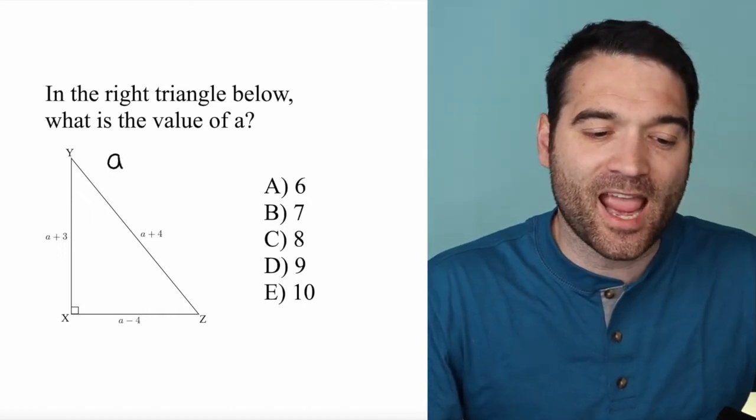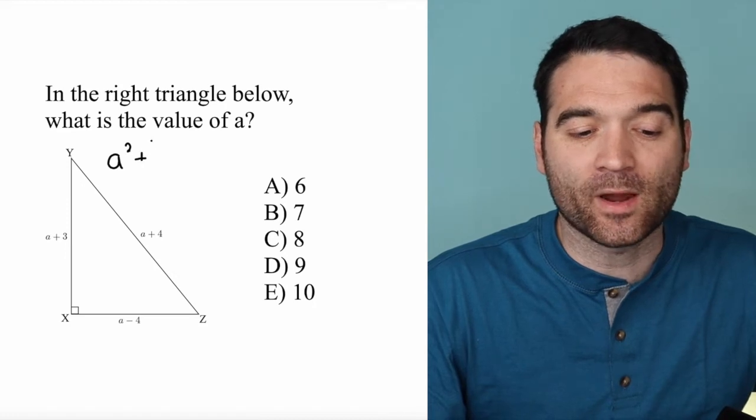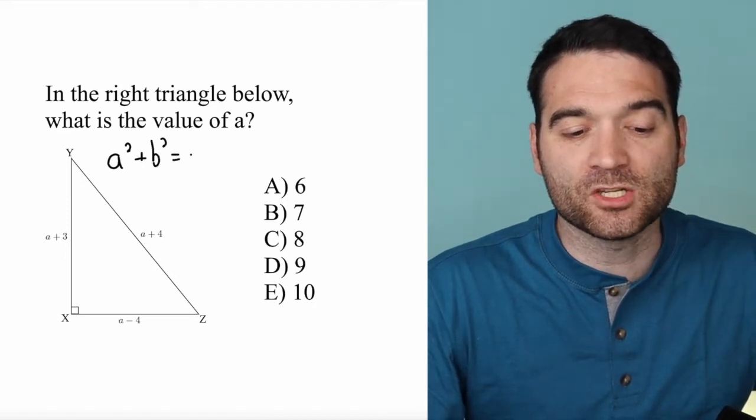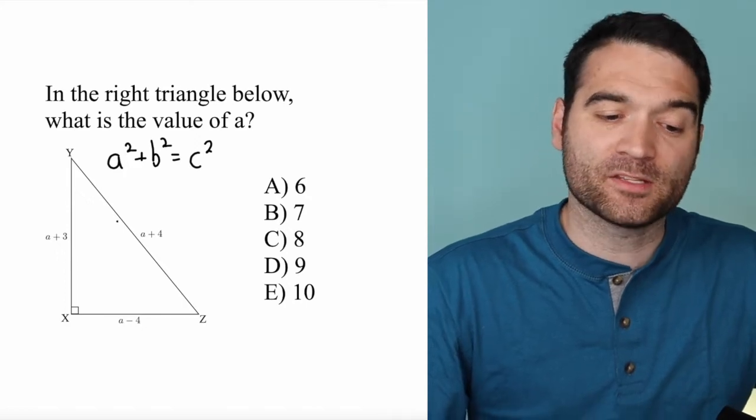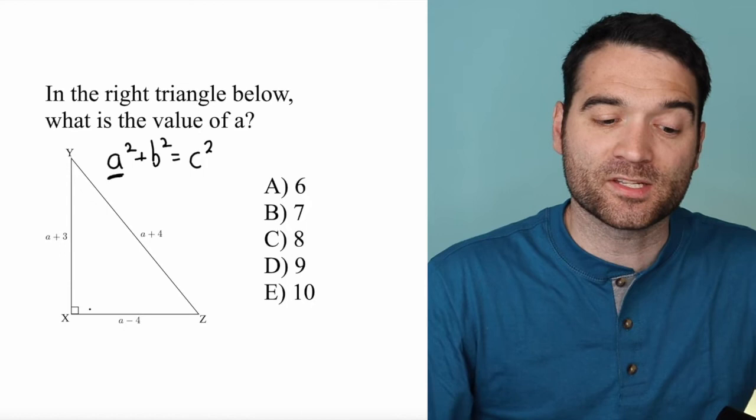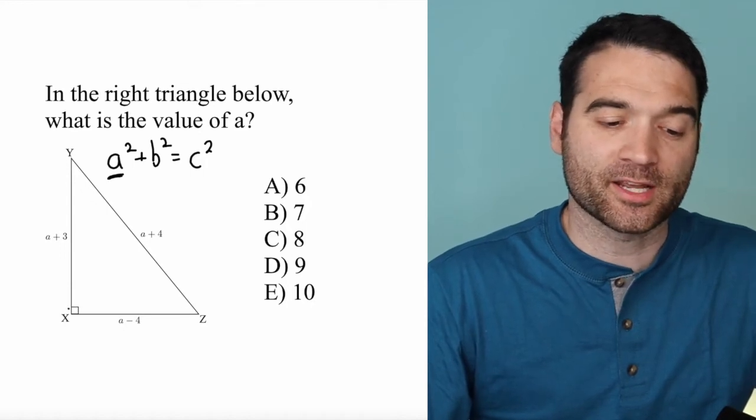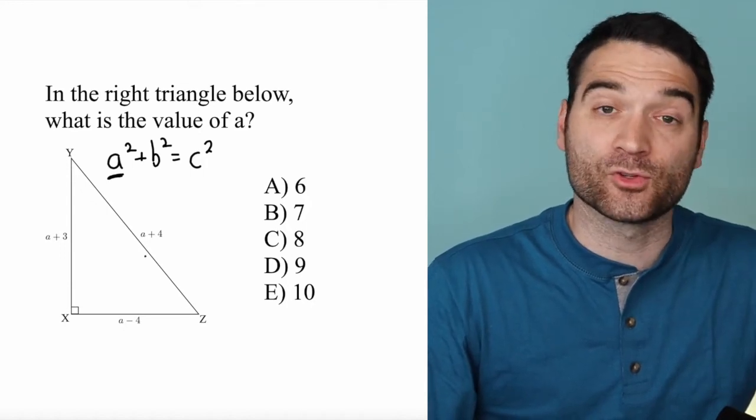The Pythagorean theorem says that a squared plus b squared equals c squared. What are a, b, and c? They're just the sides of this triangle. So one side squared plus another side squared should equal the hypotenuse squared.